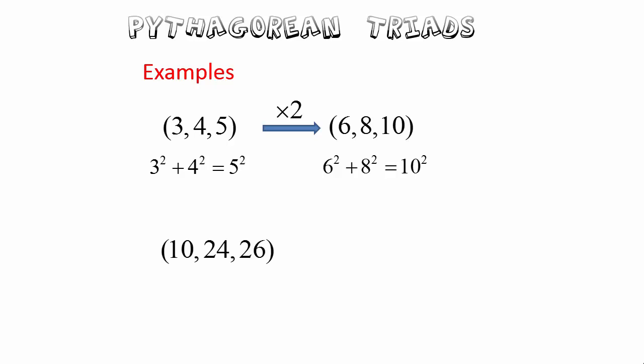Let's try this triad: 10, 24, 26. It also satisfies Pythagoras' theorem. Let's suppose we divide each side by 2. So the three sides become 5, 12, and 13. They also satisfy Pythagoras' theorem: 5 squared plus 12 squared equals 13 squared.